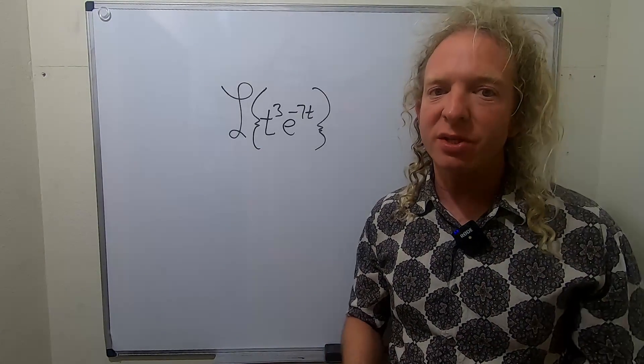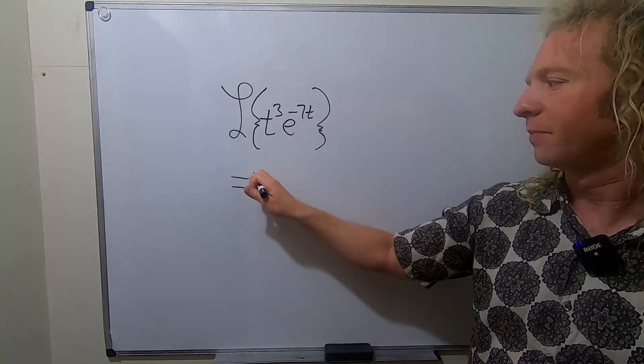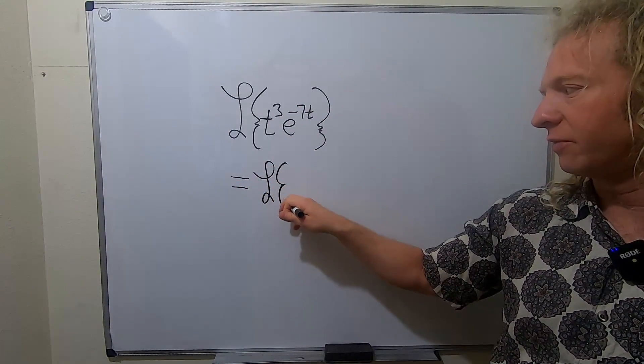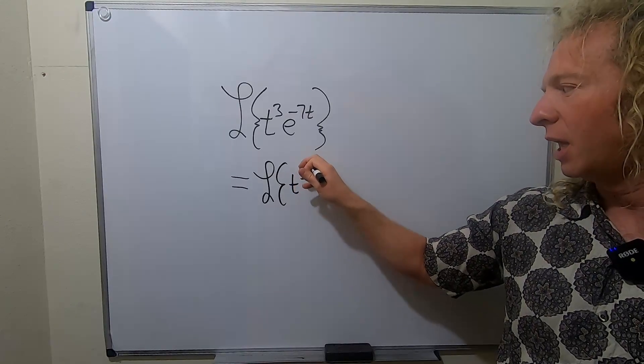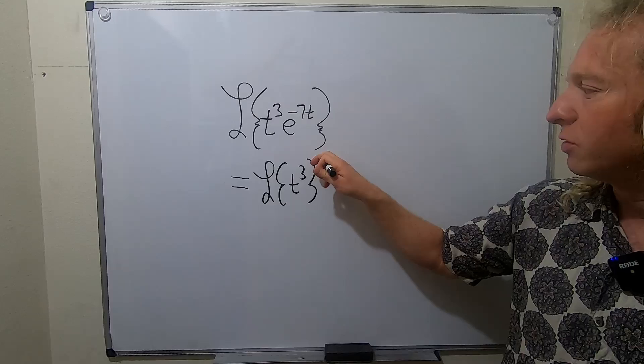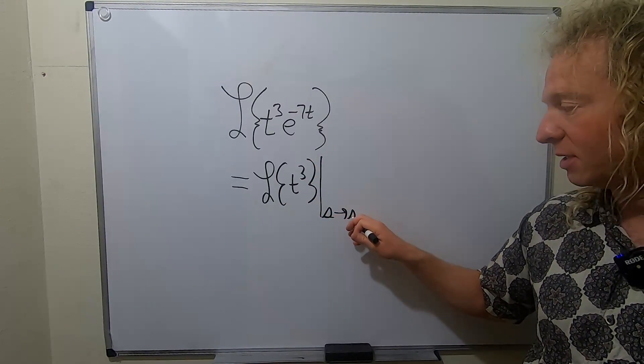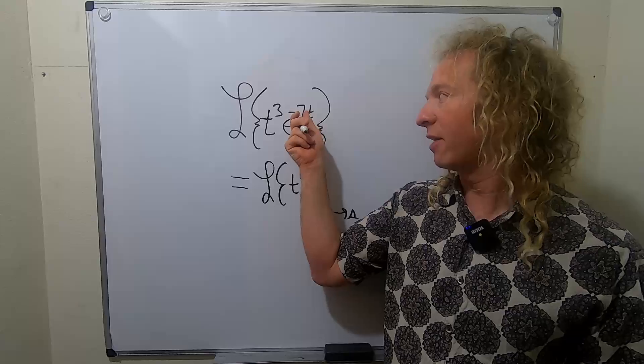So the first translation theorem says that whenever you have an exponential like this, you can just simply drop it. So we have the Laplace of t cubed, and we can replace it with a shift. So the exponential turns into a shift. So we draw a line, and we go from s to s, and it's s minus whatever is here.